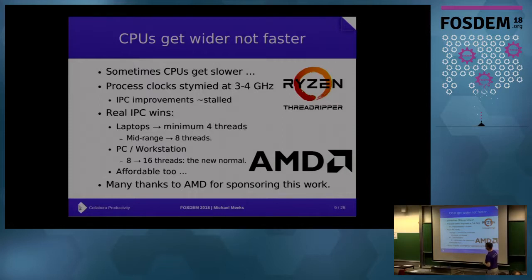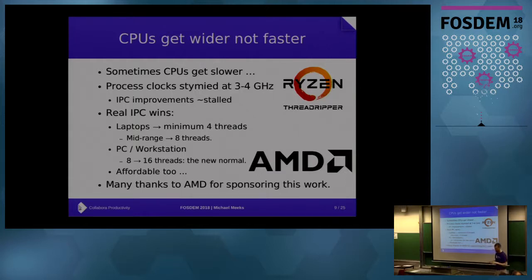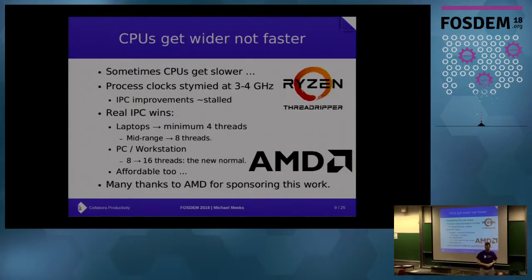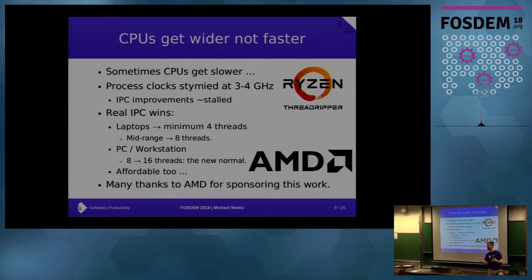Why thread? Because sometimes CPUs actually get slower - megahertz goes down, IPC goes down - but you've got three more cores doing nothing, which is good for thermal management. Process clocks are stymied at around 4GHz and aren't getting faster, so they're going much wider. IPC isn't improving hugely even with clever speculative execution. The good news is AMD is stirring up this market, providing new high-IPC widely-threaded chips. Laptops arguably have four threads minimum, mid-range is eight, workstations sixteen.